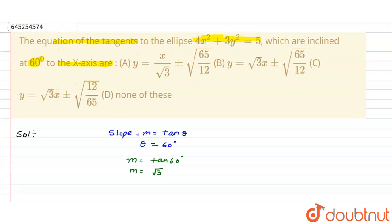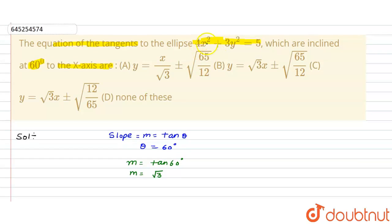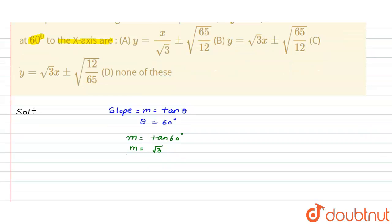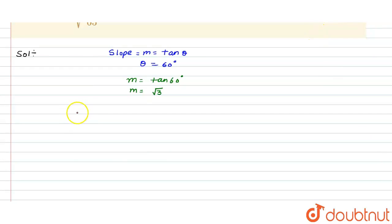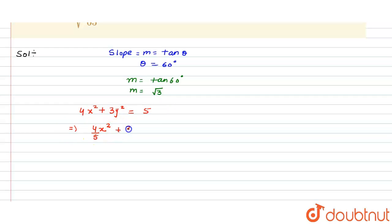Now, from the question, the given equation of the ellipse is 4x² + 3y² = 5. We rewrite this equation and then divide the complete equation by 5, getting 4x²/5 + 3y²/5 = 5/5 = 1.